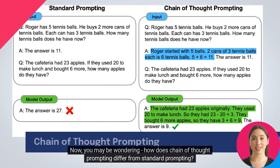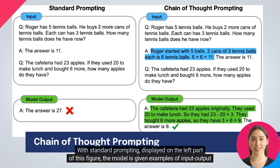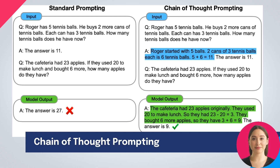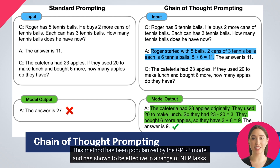You may be wondering how chain-of-thought prompting differs from standard prompting. With standard prompting, displayed on the left part of this figure, the model is given examples of input-output pairs formatted as questions and answers, before being asked to predict the answer for a test time example. This method has been popularized by the GPT-3 model and has shown to be effective in a range of NLP tasks.